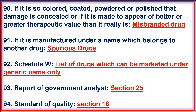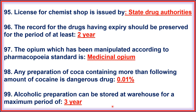94. Standard of Quality comes under Section 16. 95. License for Chemist Shop is issued by State Drug Authorities. 96. The record for a drug having expiry should be preserved for a period of at least two years. 97. The Opium which has been manipulated according to Pharmacopoeia Standard is called Medicinal Opium. 98. Any preparation of Coca containing more than 0.01% cocaine is a dangerous drug.